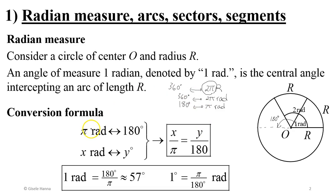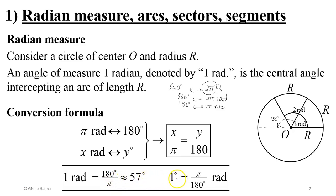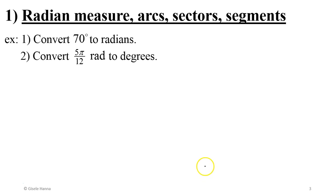Whenever you need to convert from radians to degrees or from degrees to radians, use the proportion: π radians corresponds to 180 degrees. Set up the proportion with your known and unknown angles. From this, one radian is 180/π degrees, which is approximately 57 degrees, and one degree is π/180 radians.